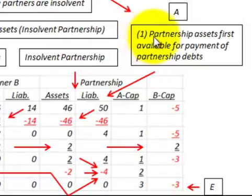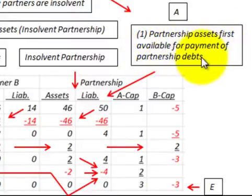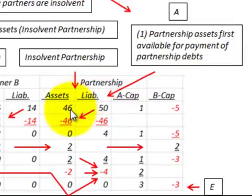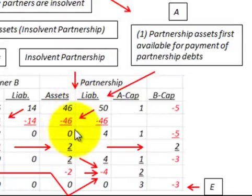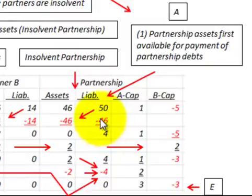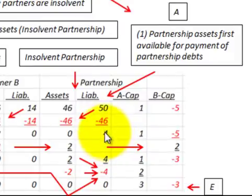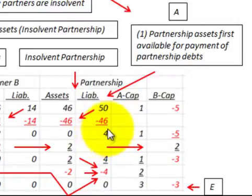The first step with marshalling of assets: partnership assets are first available for payment of partnership debts. We take the partnership assets of $46,000 and apply them against the liabilities of $50,000. That reduces the assets to zero and reduces the liabilities by $46,000, leaving a remaining partnership liability balance of $4,000 that still needs to be resolved.